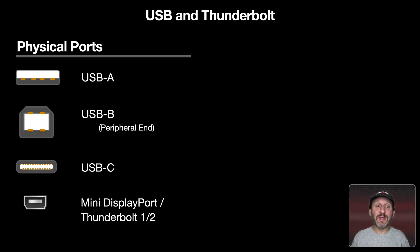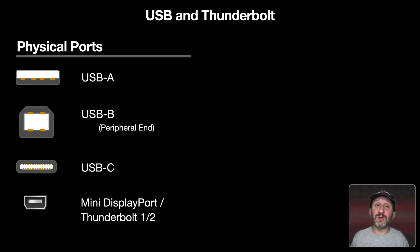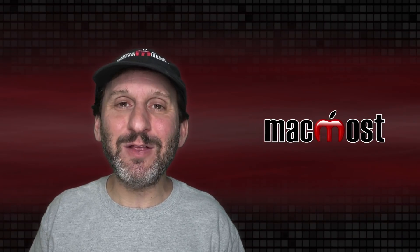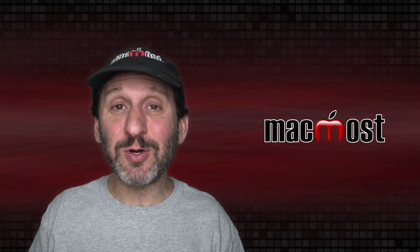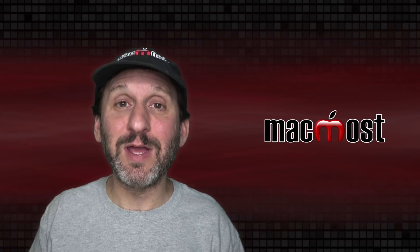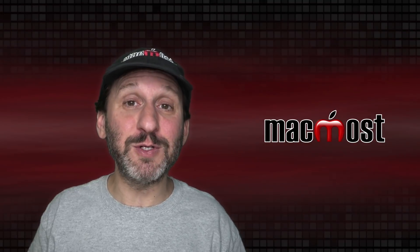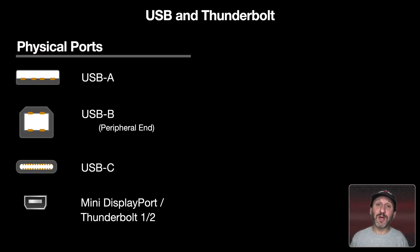Looking at physical ports, there's the USB-A port. There's also a USB-B port — you won't find that on any Mac, but you will find it on peripherals like printers and scanners. The newer type is USB-C: it's a little smaller and, most importantly, it's bidirectional — you can plug it in either way, unlike USB-A which had to go in a specific direction. A fourth type is the Thunderbolt 1 or 2 port, which has the same physical shape as a Mini DisplayPort connector.